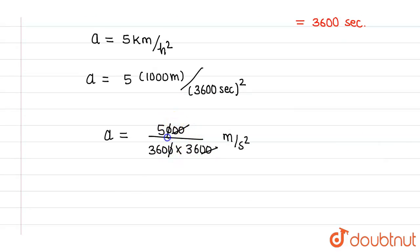Overall, I will be left with 5 divided by 36 into 360 meter per second square. Now, if I calculate this, this will come out to be 0.0003858 meter per second square.